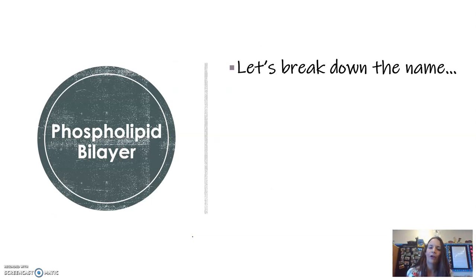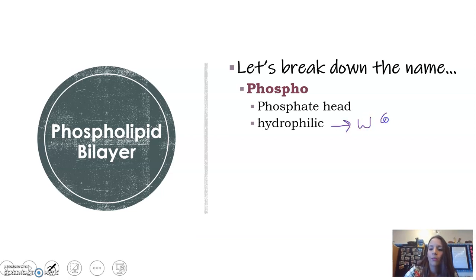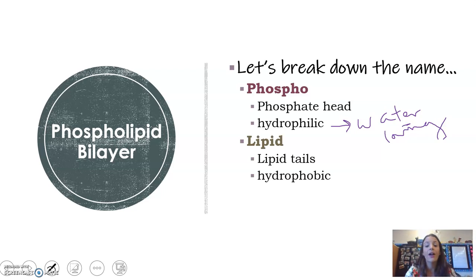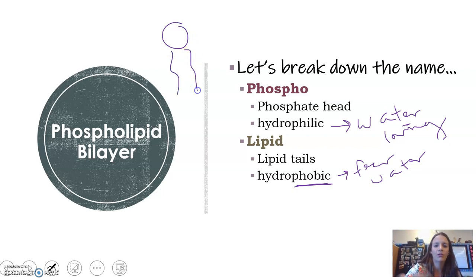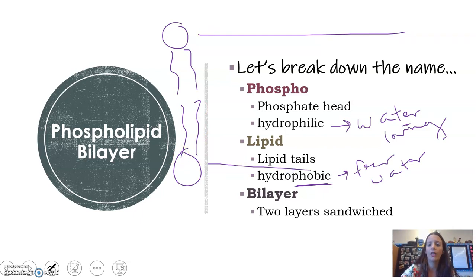Let's break down the name phospholipid bilayer a little further. 'Phospho' is a phosphate head — this is the hydrophilic, or water-loving, portion of the cell membrane. Then we have 'lipid,' and these are lipid tails that are hydrophobic — they fear water. The head and tail looks like a circle with two little tails coming down. 'Bilayer' simply means there are two layers sandwiched together. Because the tails are hydrophobic, they want to face each other, so the water-loving parts face out.